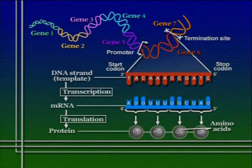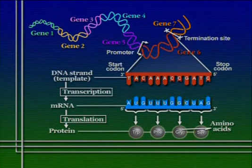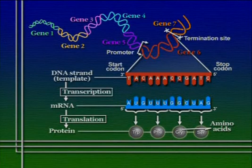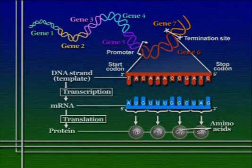Let's begin today by reminding ourselves where we've gotten so far in following the journey of genetic information from DNA to proteins. In the last lecture, we focused on the process by which the information found in an organism's DNA, coded as a sequence of bases, is converted into a complementary strand of messenger RNA. Through this process, which we called transcription, we've now gotten a sequence of RNA that has a series of bases specifying a sequence of amino acids in the protein we're trying to build.